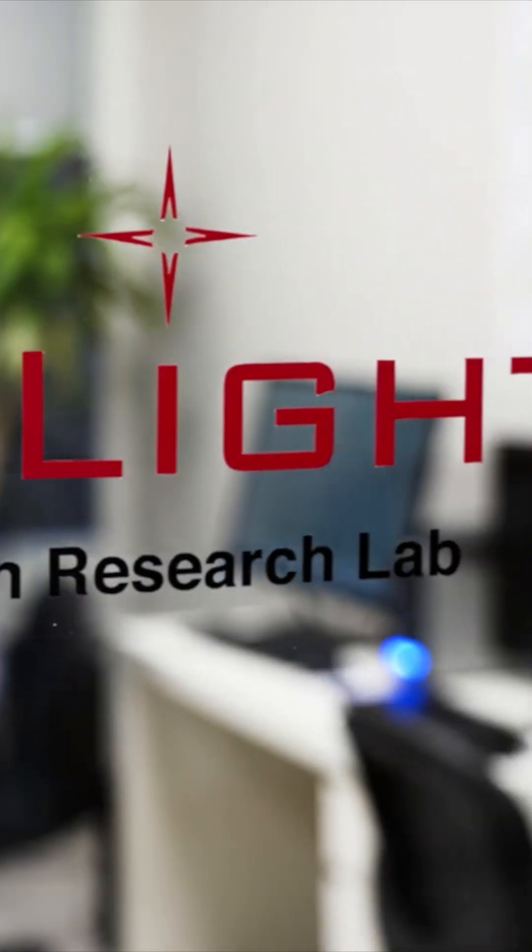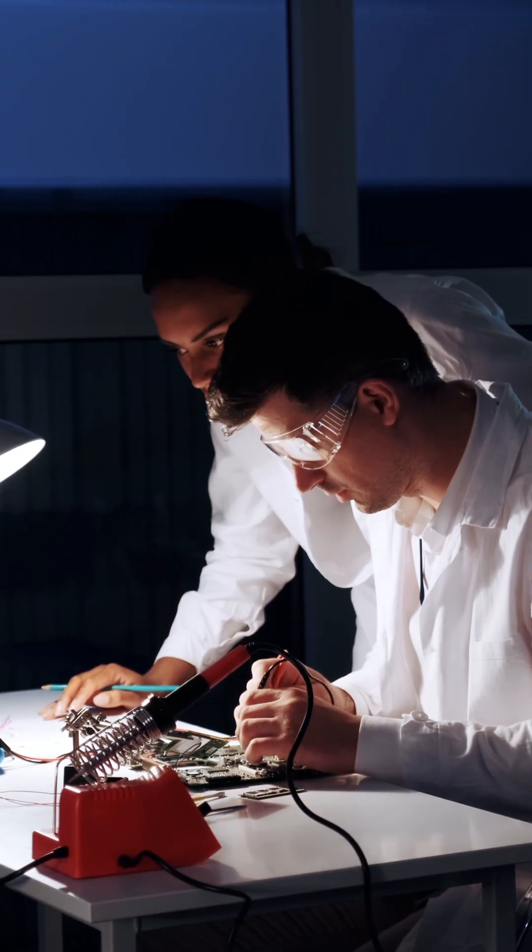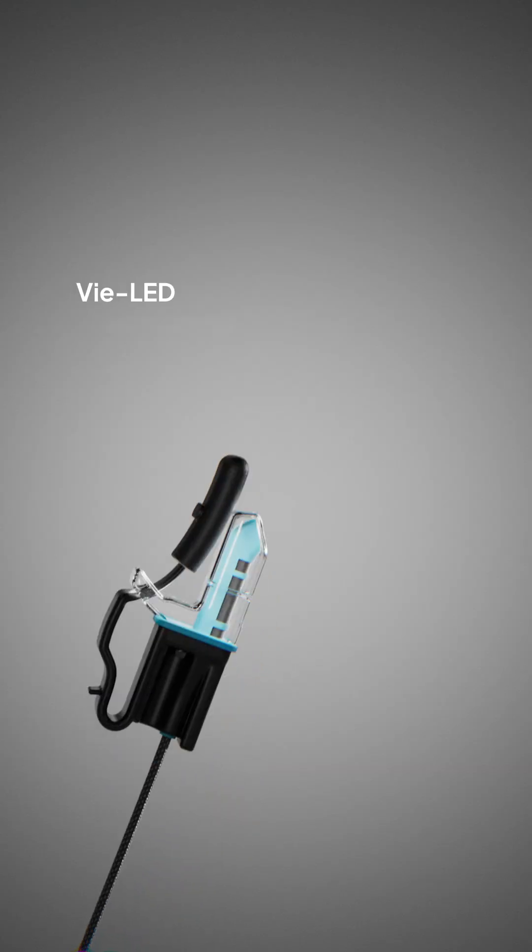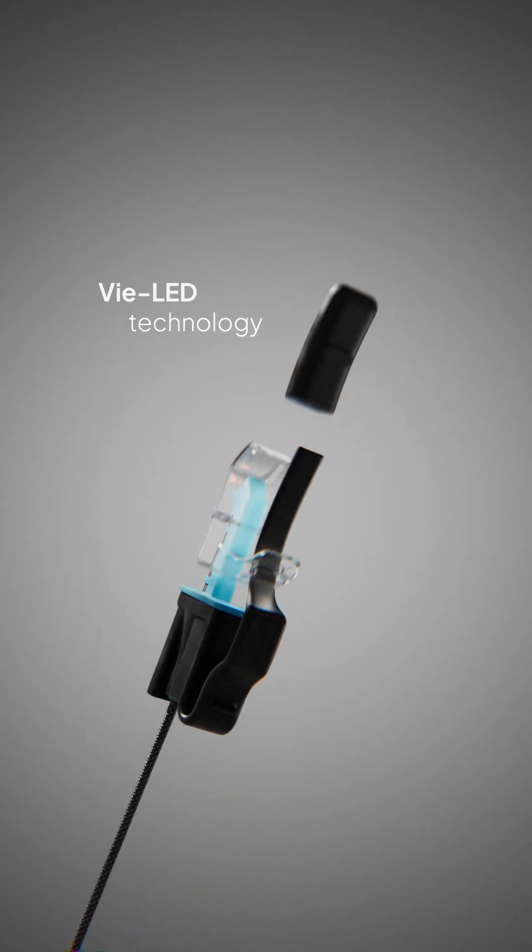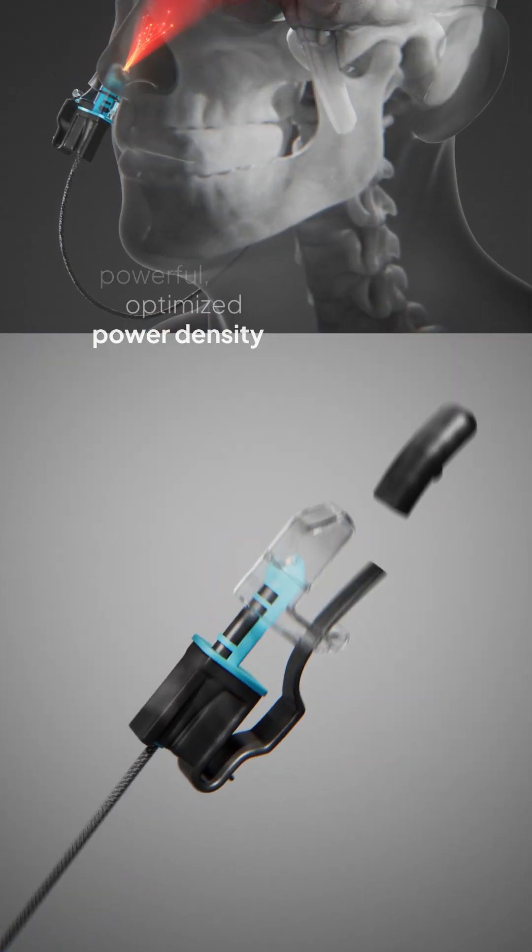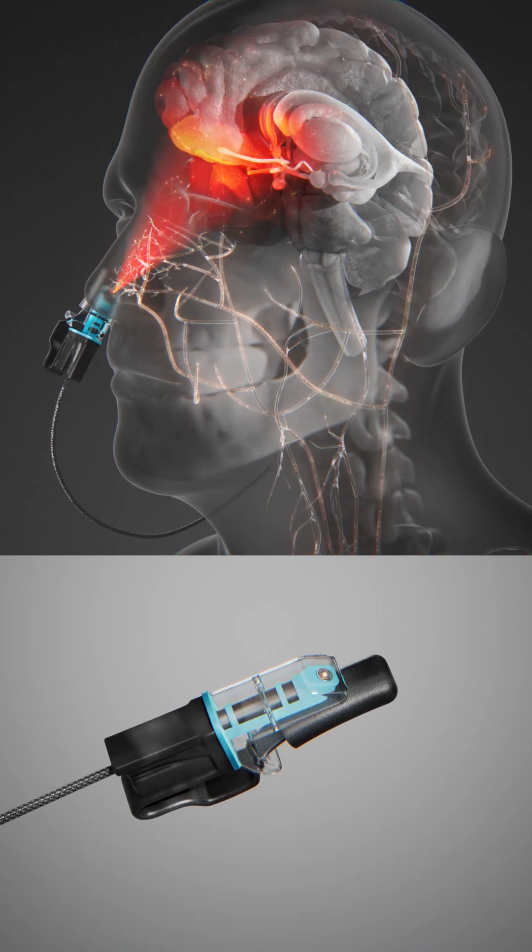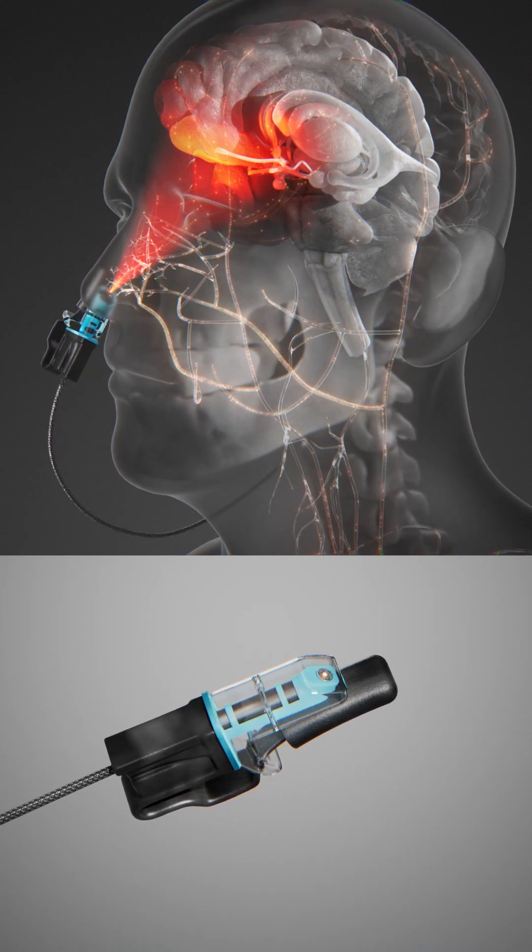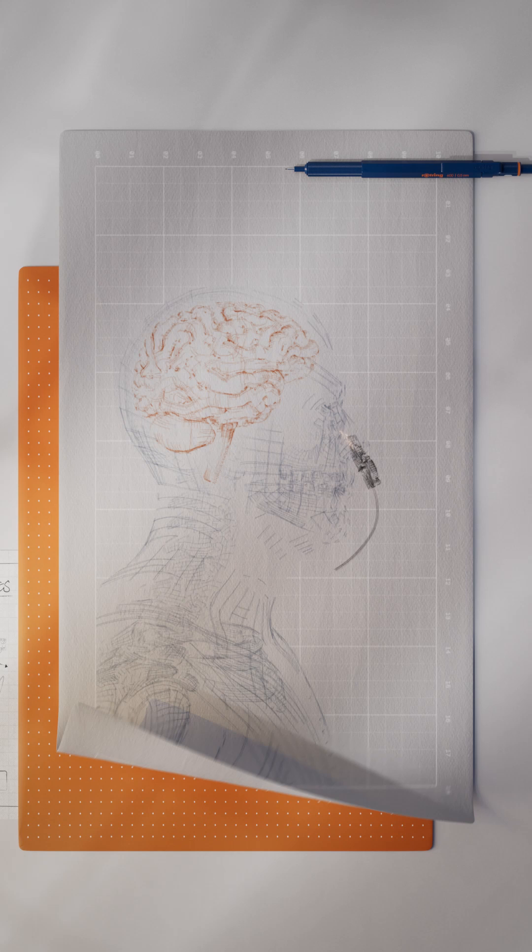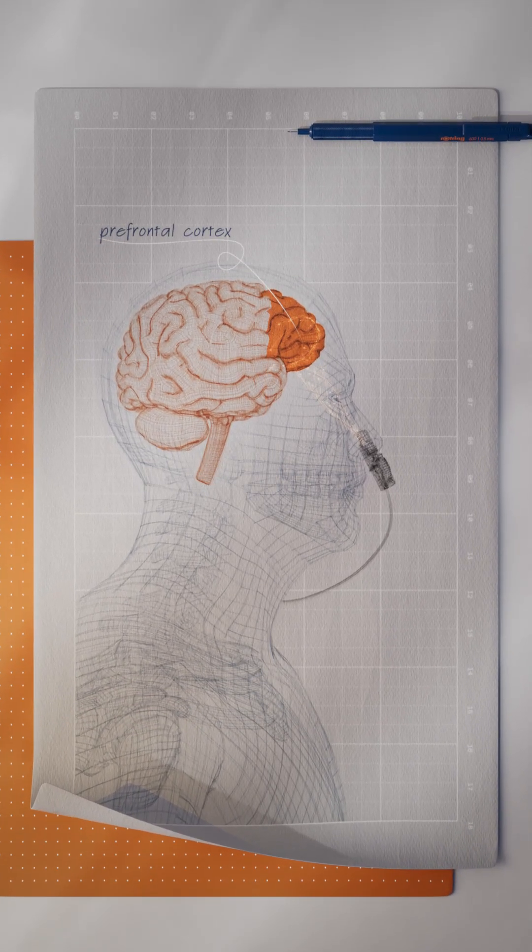V Light pioneered this approach and holds a granted patent for the intranasal method of photobiomodulation. Our V LED technology uses microchips to generate a powerful, optimized power density that fits comfortably in the nose, delivering photons to areas dense in capillaries, free nerve endings, and trigeminal connections.